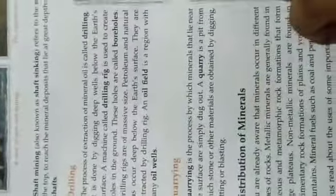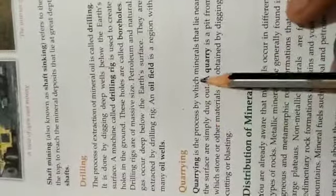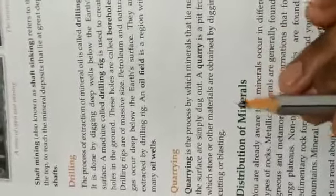Next, we talk about quarrying — the third method of extracting minerals from the earth's surface. Quarrying is the process by which minerals that lie near the surface are simply dug out. A quarry is a pit from which stone or other materials are obtained by digging, cutting, or blasting. This shows a marble quarry site.